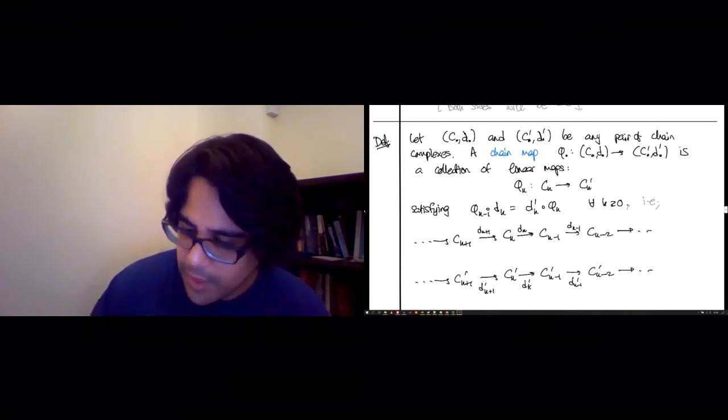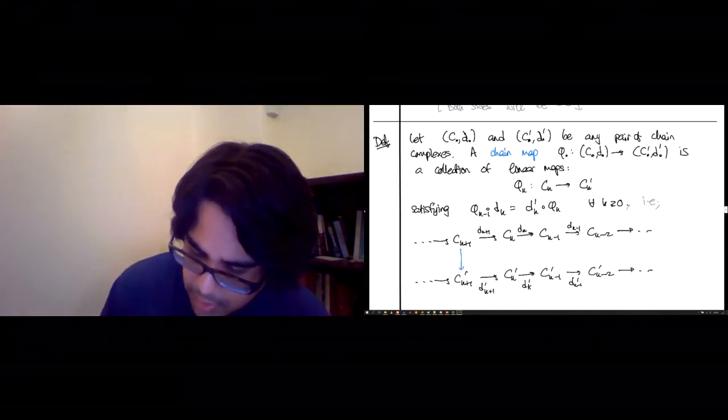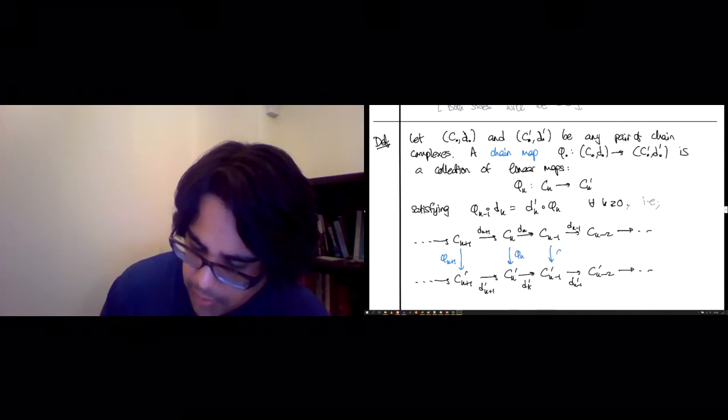And here you have the boundary maps of K. Here you have the boundary maps of, sorry, upstairs boundary maps of C and downstairs boundary maps of C'. And what these φ's do is that they sandwich themselves in the middle here. So there's φ_{k+1}, there's φ_k, there's φ_{k-1}, and so on.